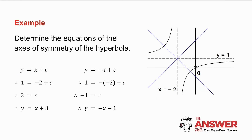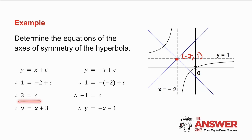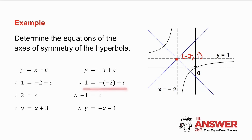The first axis of symmetry has equation y equals x plus c. It passes through the point (minus 2, 1), so we substitute to get the value of c, giving the equation of that axis of symmetry. For the second one, we again substitute (minus 2, 1), get the value of c, and obtain the other equation.